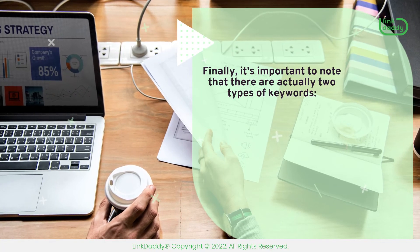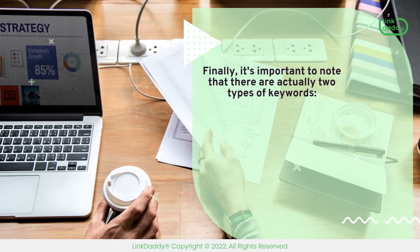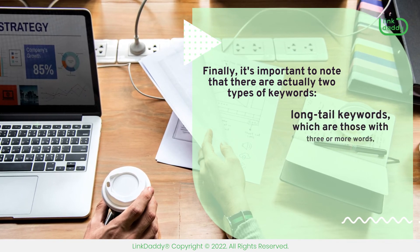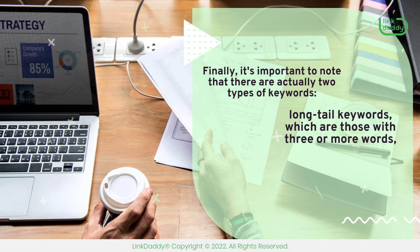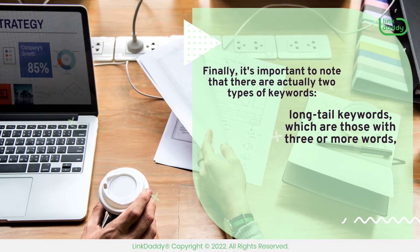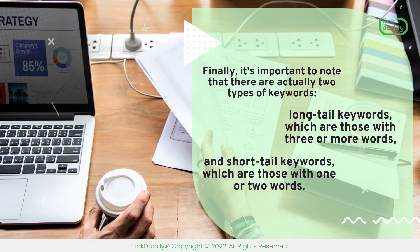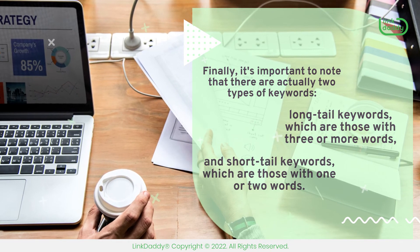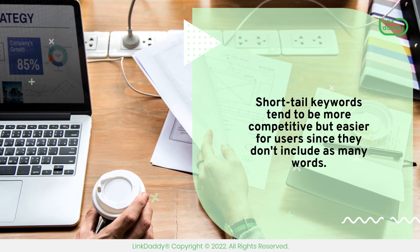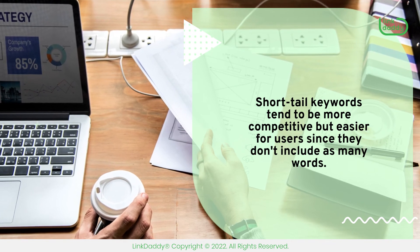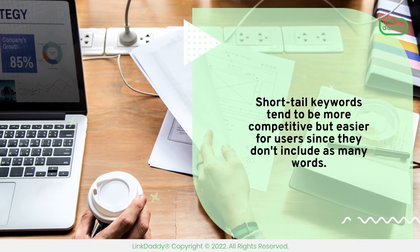Finally, it's important to note that there are actually two types of keywords: long-tail keywords, which are those with three or more words, and short-tail keywords, which are those with one or two words. Short-tail keywords tend to be more competitive but easier for users since they don't include as many words.